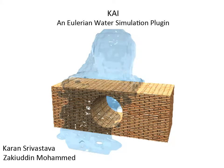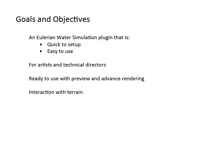We present KAI, an Eulerian water simulation plug-in for Maya 2012, a project by Zakiuddin Muhammad and Karan Shavasdav. The goal of this project was to develop a Maya water simulation plug-in that is quick to set up and easy to use.